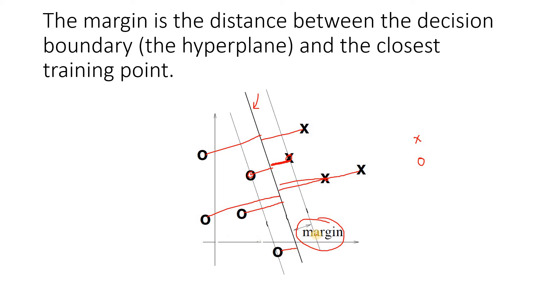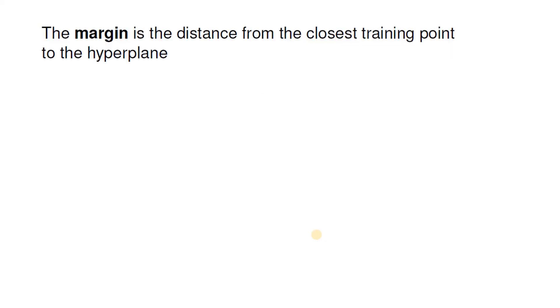How can you represent this in terms of mathematical notation? Very simple. The margin, again and again I am telling, what is margin? Margin is distance from the closest training point to the hyperplane, or the margin is basically distance between the hyperplane and the training point which is basically closest to that hyperplane.